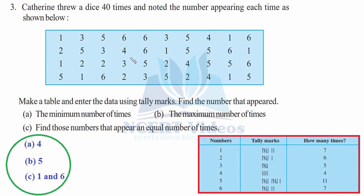For number 1: mark one time, second time, third time, fourth time, and fifth — slash it. Then a sixth time and seventh time. So 1 comes 7 times when she threw the dice. Similarly, calculate for all remaining numbers to complete the tabular representation of the 40 dice throws.